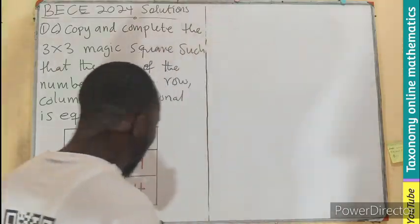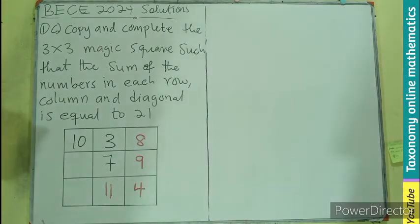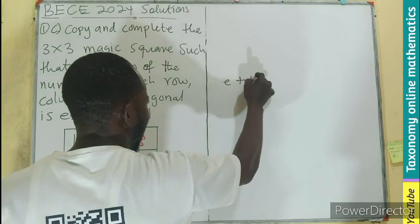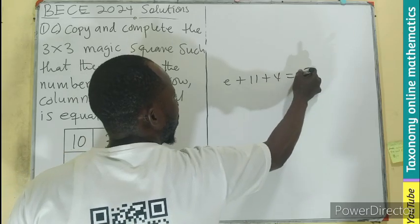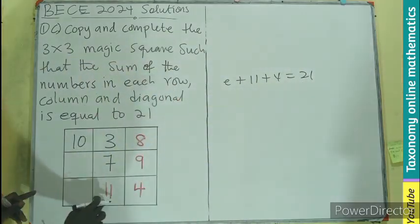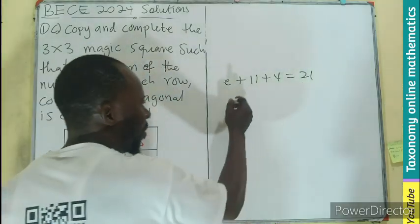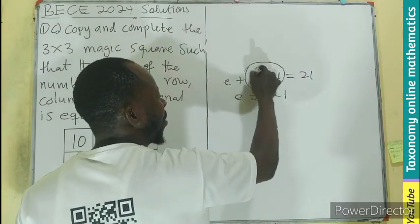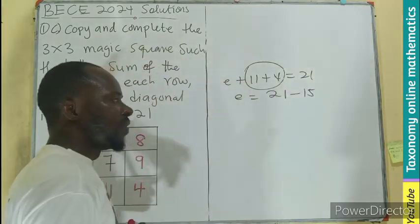So I'll be having e plus 11 plus 4 gives 21, 1, 2, 3, and that would be e equals 21 minus sum of this which is 15. So that would be 6.